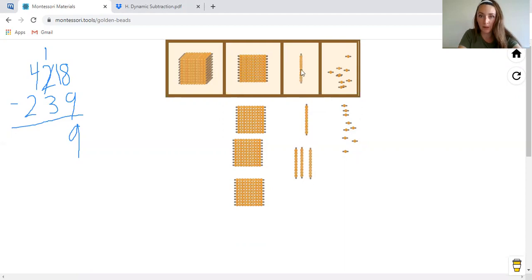One, two, three, four, five, six, seven, eight, nine, 10. Okay. So I borrowed from my hundred spot. We made that four a three.